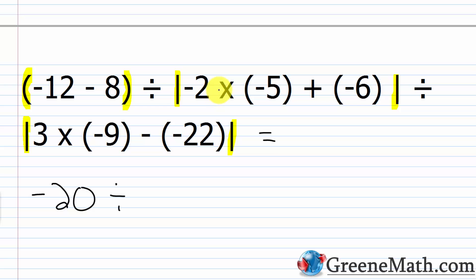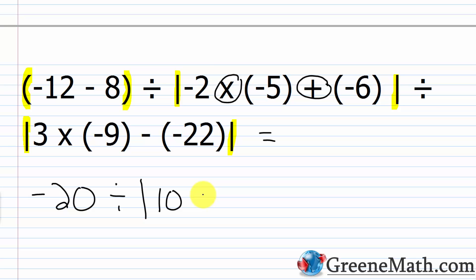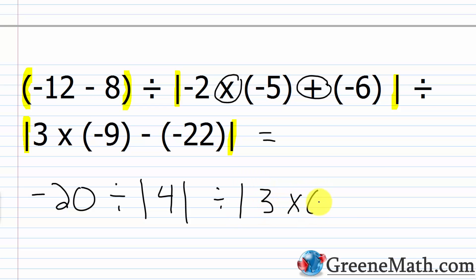Now inside these absolute value bars, I have negative 2 times negative 5 plus negative 6. Multiplication and addition — I want to multiply before I add. Negative 2 times negative 5 gives me positive 10. So the absolute value of 10, and then we're adding negative 6, which is basically the same as subtracting 6. So I'm going to write this as 4, because 10 plus negative 6, or 10 minus 6, is 4. So we'd have the absolute value of 4. Then divided by, we have the absolute value of 3 times negative 9, then minus a negative 22, which I can just think of as plus 22.